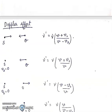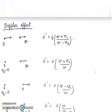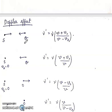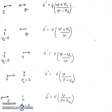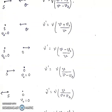Doppler effect: when both source and observer are moving towards each other, ν' = ν(V + Vo)/(V − Vs). When the source is stationary and the observer is moving towards the source, ν' = ν(V + Vo)/V. Similarly, other cases have their respective formulas.